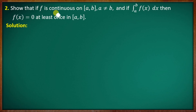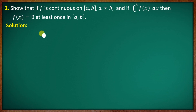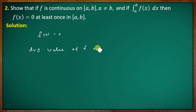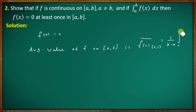Additional problem: show that if f is continuous on closed interval [a, b] with a ≠ b, and if the integral from a to b of f(x) dx = 0, then f(x) = 0 at least once in closed interval [a, b]. By the mean value theorem, the average value of f on [a, b] is f-bar = 1/(b−a) times integral from a to b of f(x) dx. Since the integral equals 0, the average value is 0.